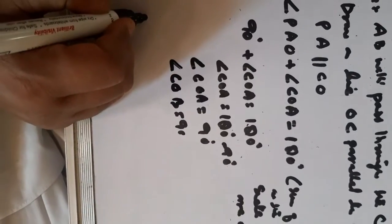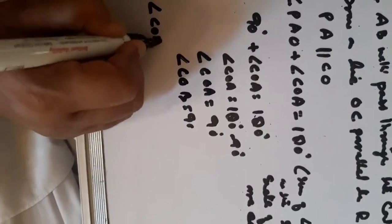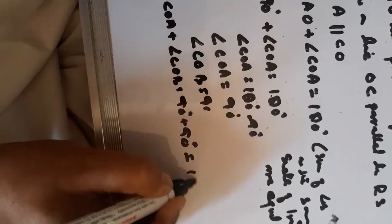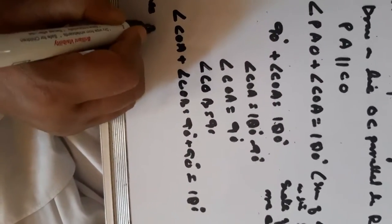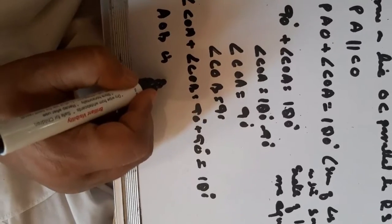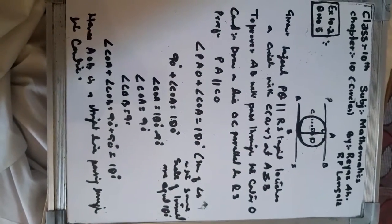Since angle COA plus angle COB equals 180 degrees, AOB is a straight line passing through the center O. Hence proved. This is a very easy question. I hope you understood it. Have a nice time. Allah hafiz.